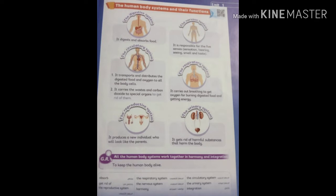Now we will study the structure of the human body. The human body consists of systems. All these systems are working together to keep the human alive. That means any system cannot work without the help of another system.